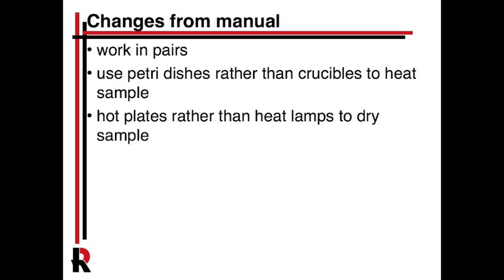There are a couple of significant changes from the lab manual. First, you work in pairs. The main change is that the section where they use a crucible heated over a Bunsen burner is being replaced. Crucibles are a little hard to handle, so instead we're going to use petri dishes from your drawers and a hot plate — both for the initial dehydration and for drying the copper at the end instead of heat lamps. Other than that, everything else will be the same.